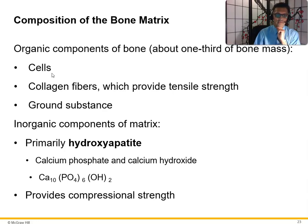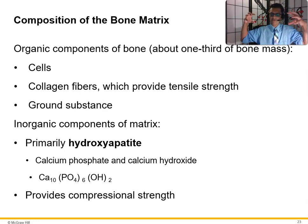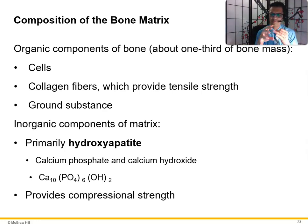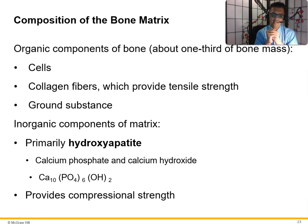Composition of the bone matrix: organic components make up about one-third of bone mass — cells, collagen fibers, and ground substance. Inorganic components are primarily hydroxyapatite — calcium phosphate and calcium hydroxide — which provide compressional strength. Bone is very resistant to compression and tensile forces such as stretching and twisting. For a fracture to occur, the timing, angle, and force all have to be just right.